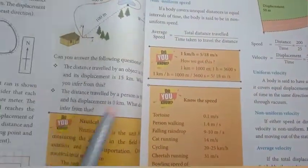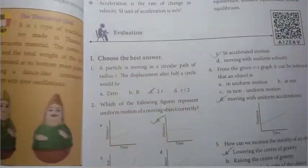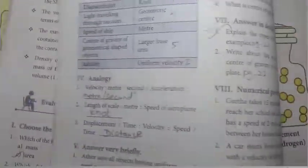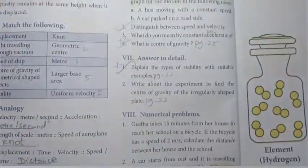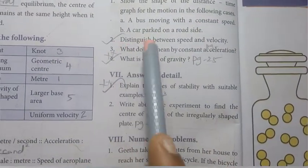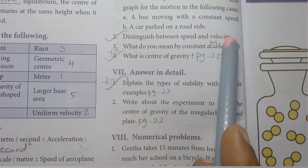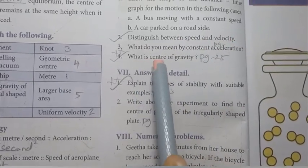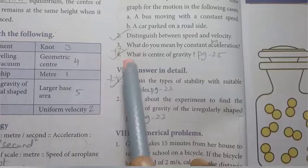Second lesson, Force and Motion, page number 25. Start. So, 1 mark questions thoroughly. Answer briefly second question: distinguish between speed and velocity, important. What is center of gravity? It is very very important.